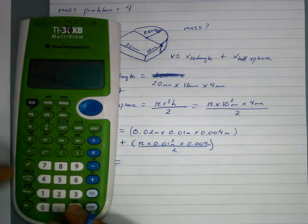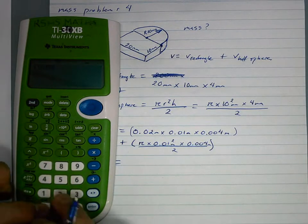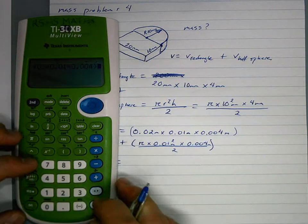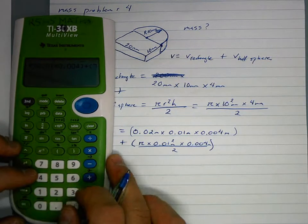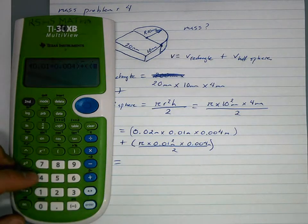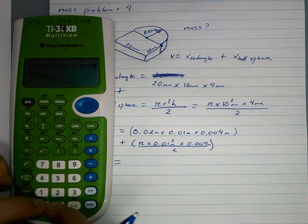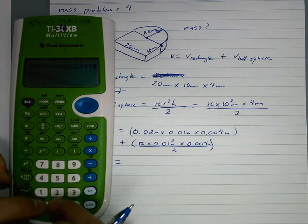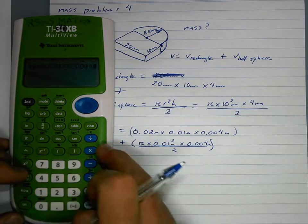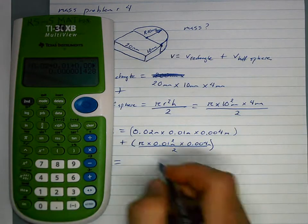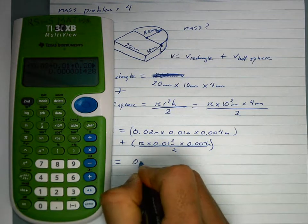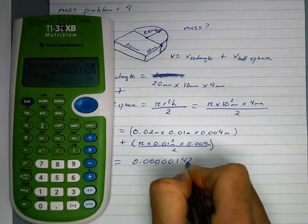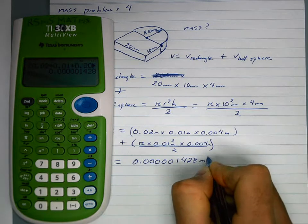So our total volume is 0.02 times 0.01 times 0.004, plus, put this in a couple brackets, pi times 0.01 squared times 0.004, divide that by 2. So our volume is 0.000001428 meters cubed.